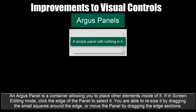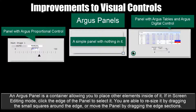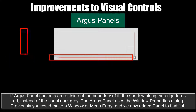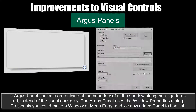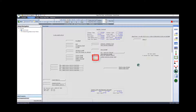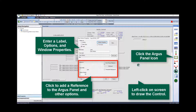An Argus panel is a container allowing you to place other elements inside of it. If in screen editing mode, click the edge of the panel to select it. You can resize it by dragging the small squares around the edge, or move the panel by dragging the edge sections. If the contents of the panel are outside the boundary, the shadow along the edge turns red instead of the usual dark gray. The Argus panel uses the new Windows property dialog, which now includes a panel option in addition to window and menu entry. To configure: click the Argus panel icon, enter a label, options, and window properties, then click to add a reference and other options.